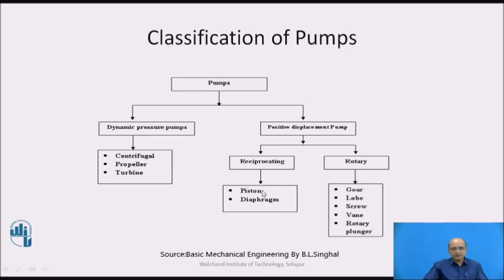Under the reciprocating pumps, we have the piston type of pumps and the diaphragm type of pumps. Whereas under the rotary pumps, we have the rotary pumps, lobe pump, screw type of pump, and vane type of pump.